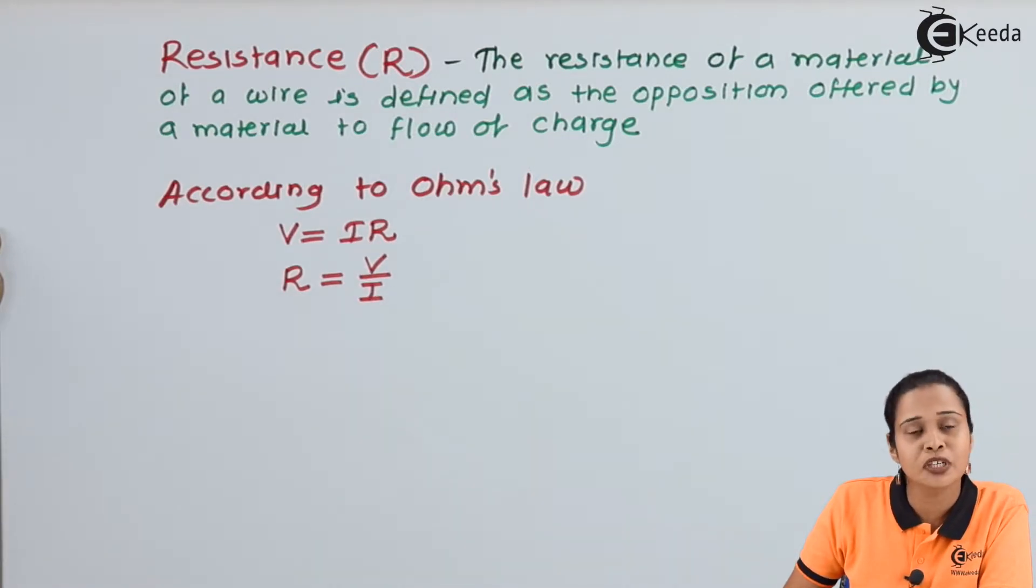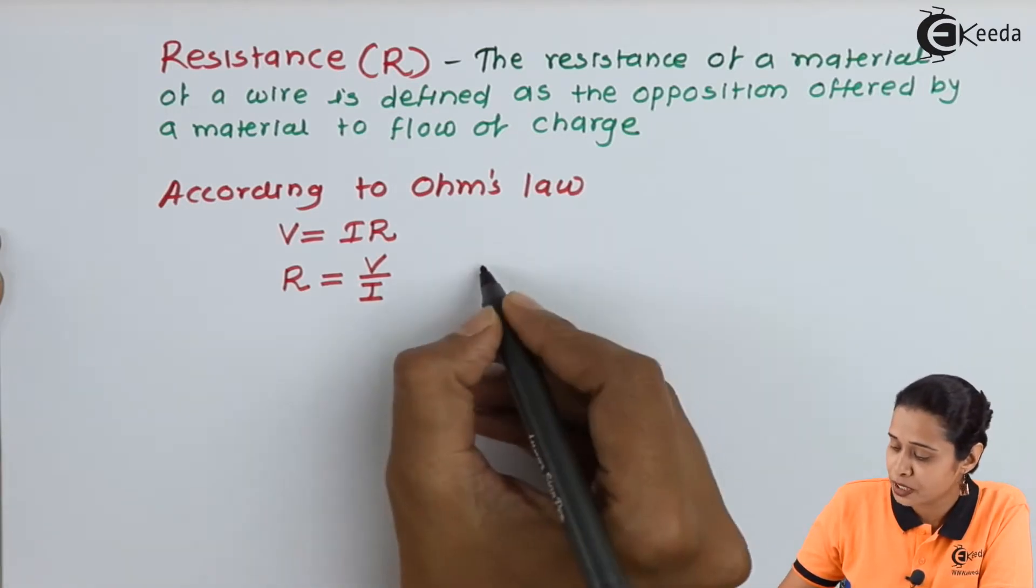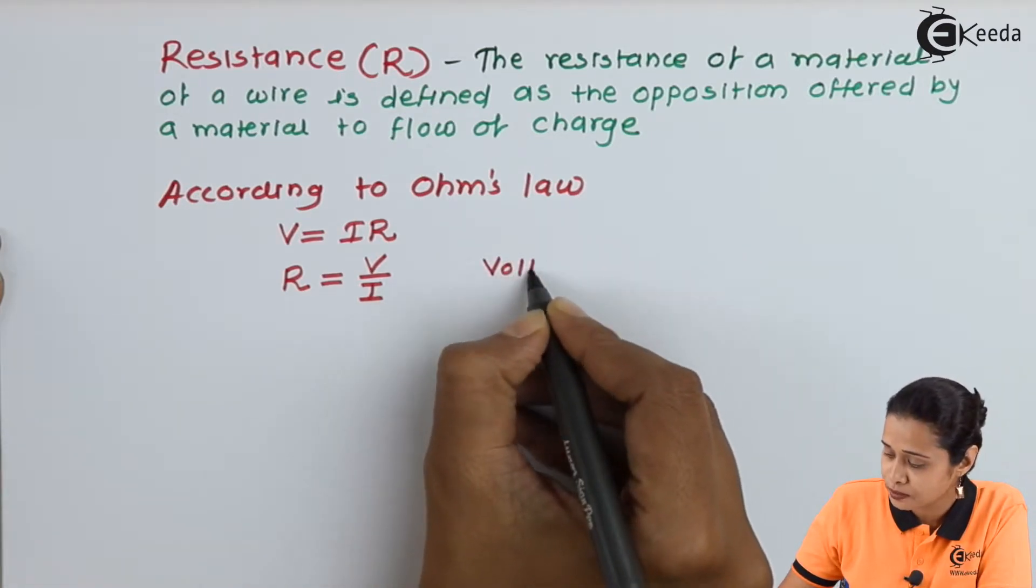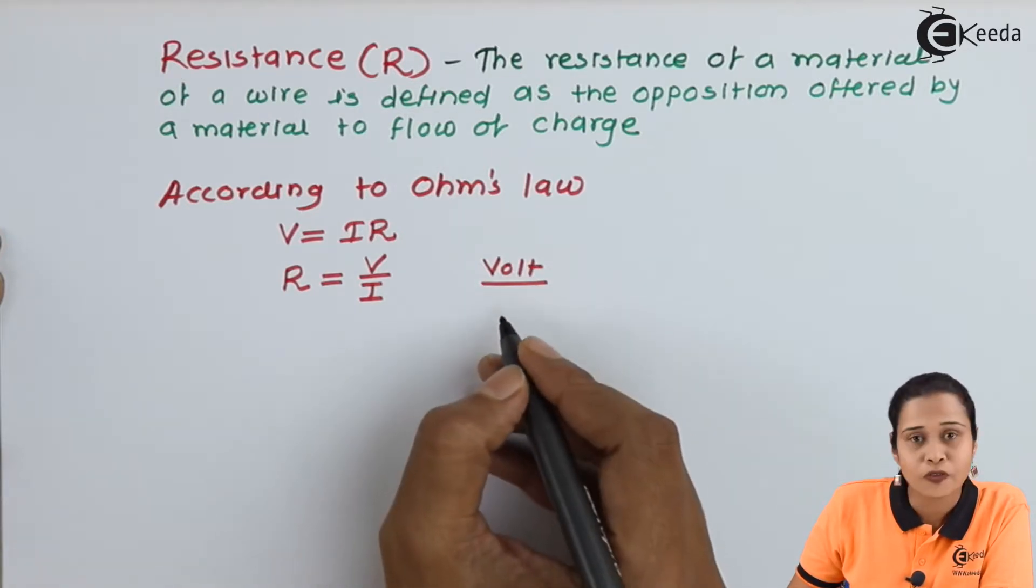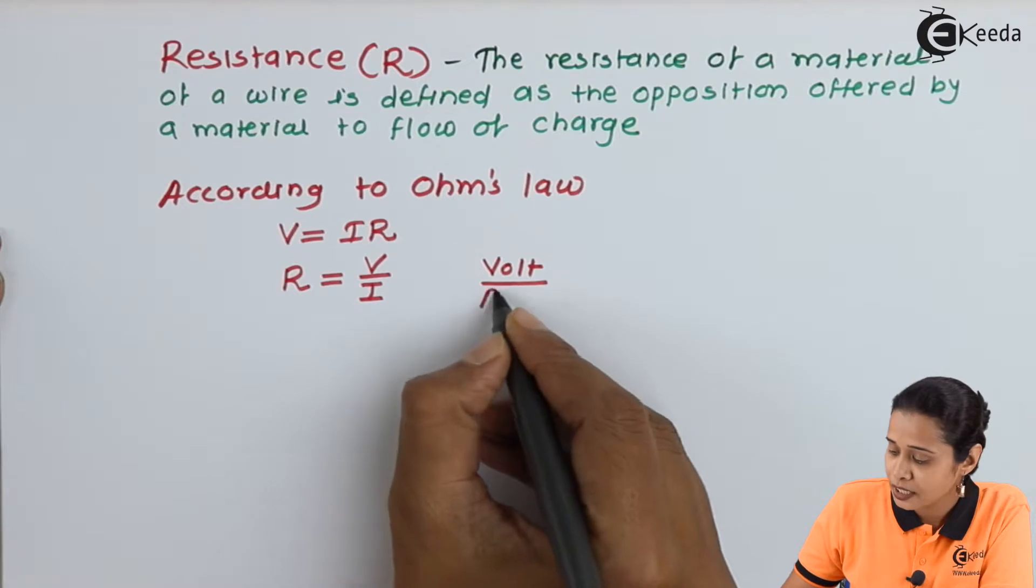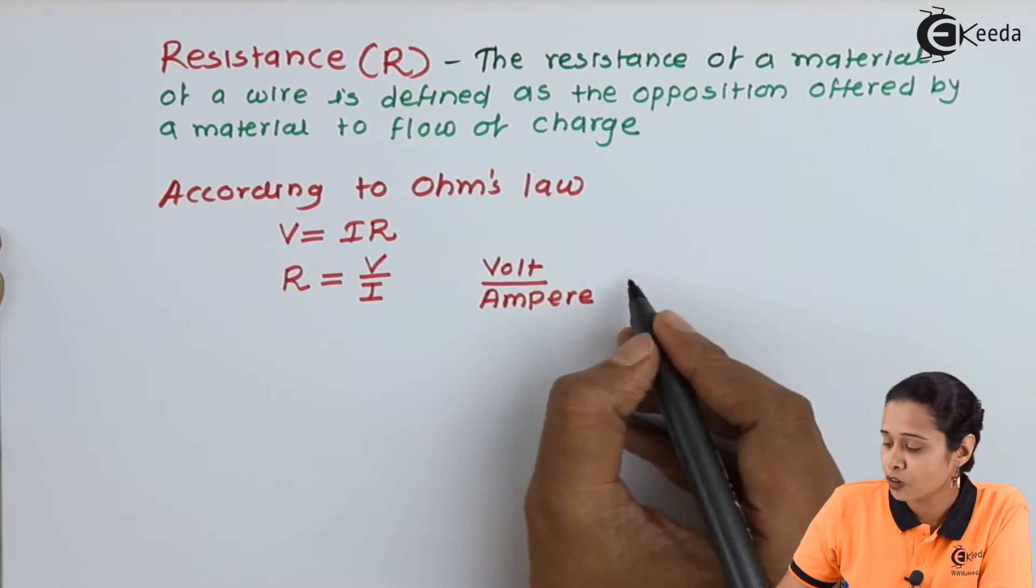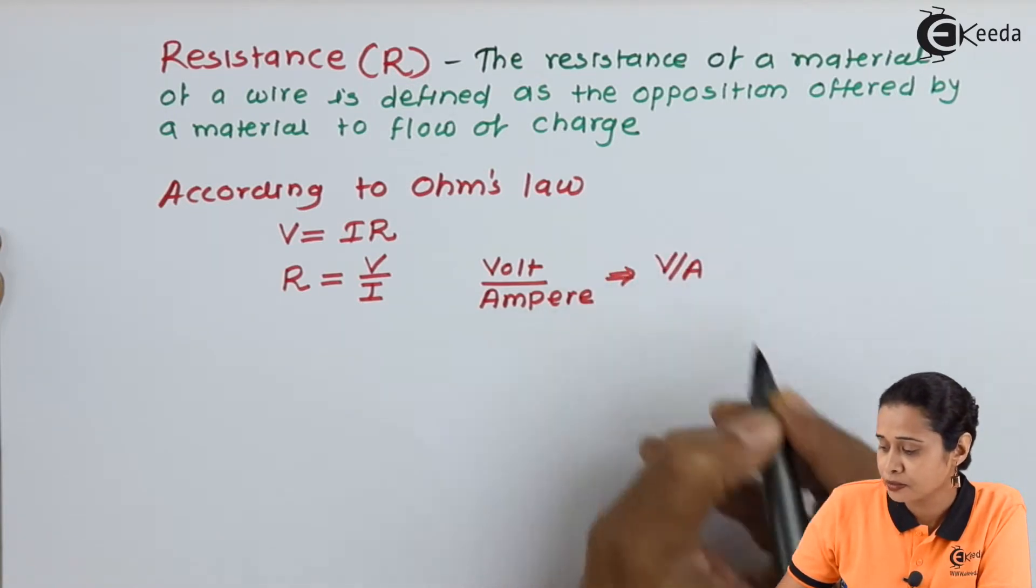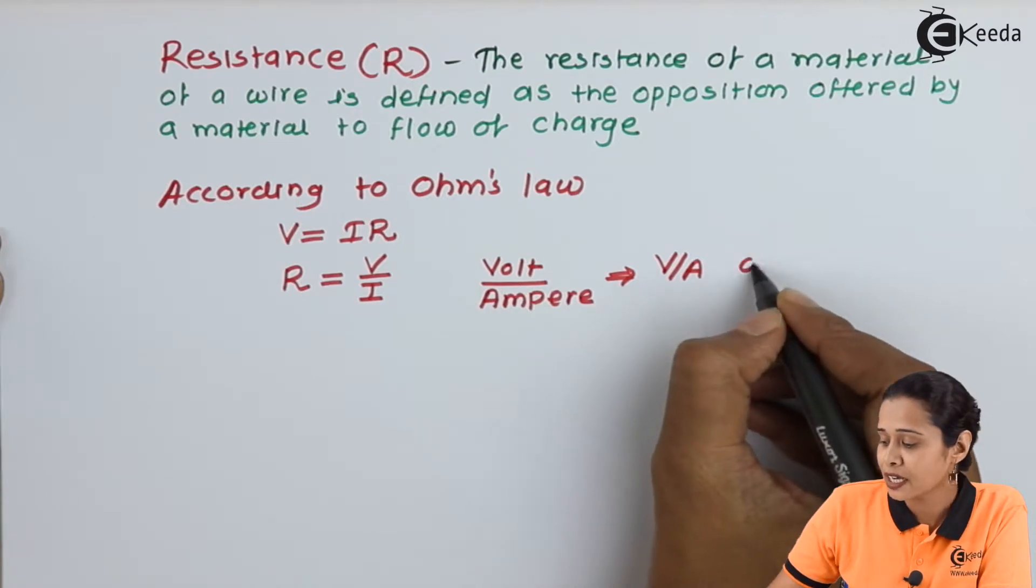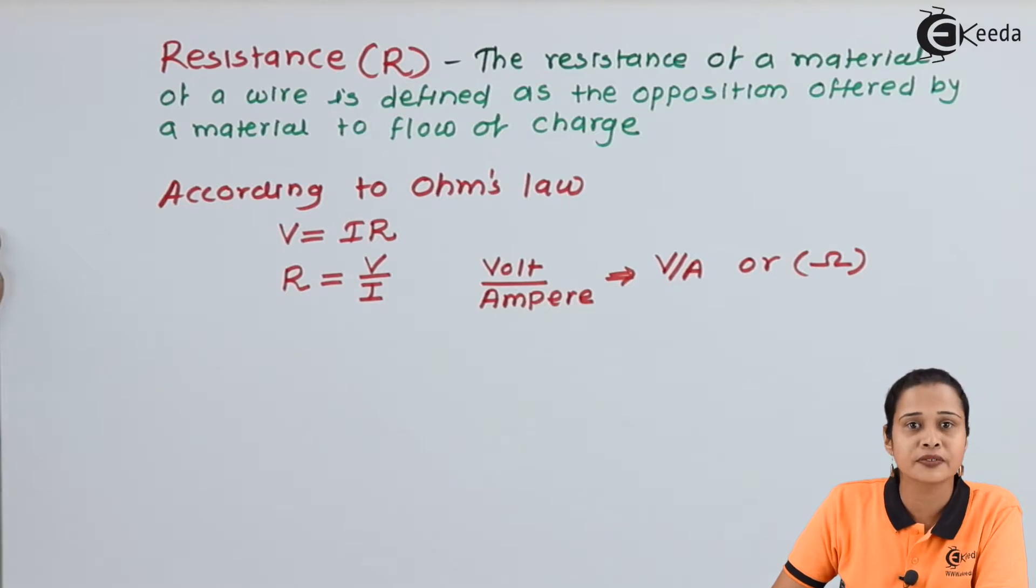Let us write down the unit of resistance. We know V is potential difference, so we can write Volt. Current, the unit of current is Ampere. Hence, the unit of resistance is Volt per Ampere, or the SI unit is Ohm. In this way, we can write the unit of resistance.